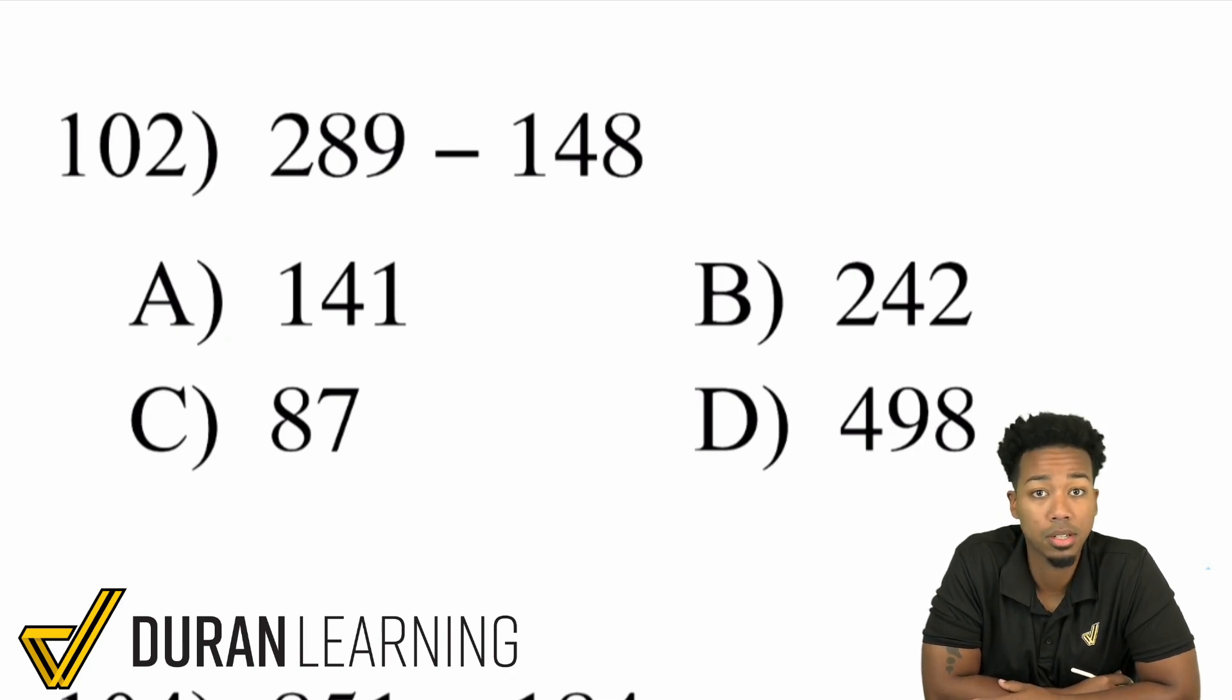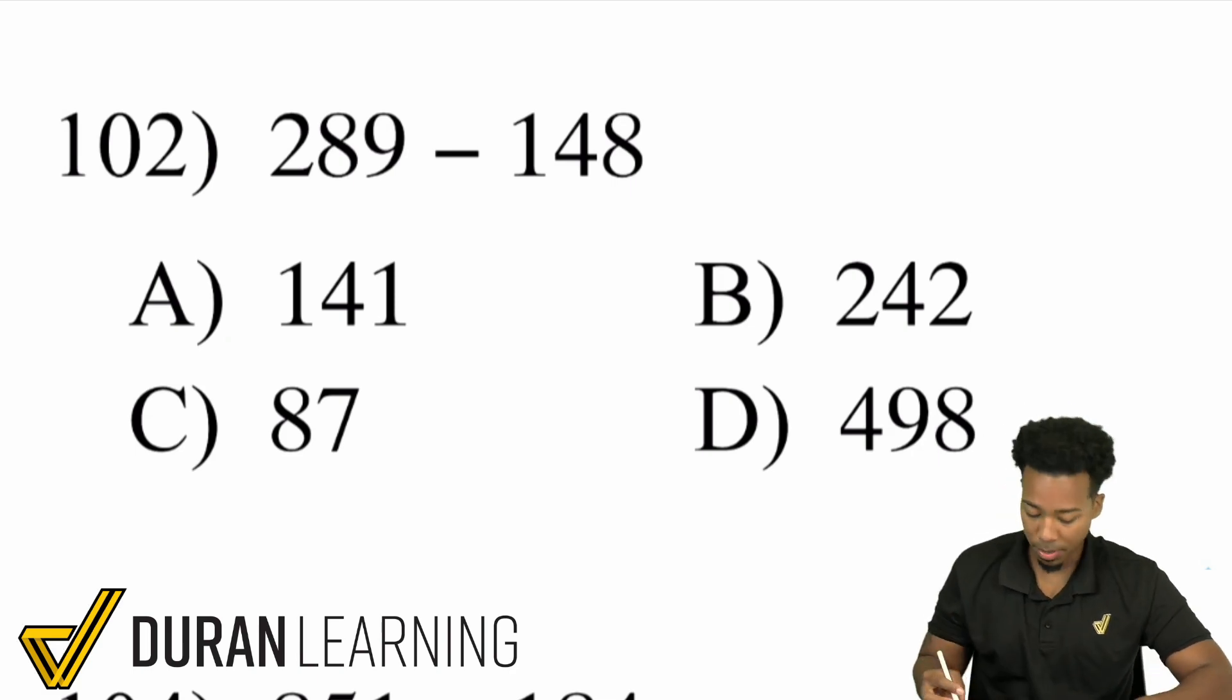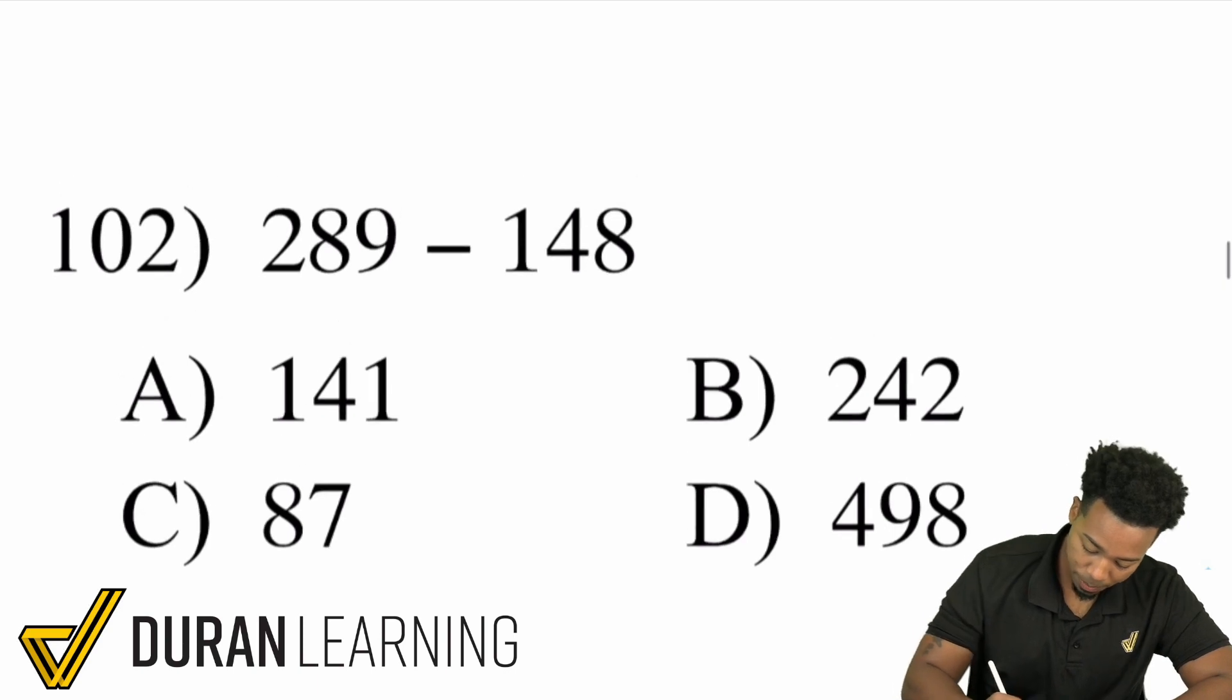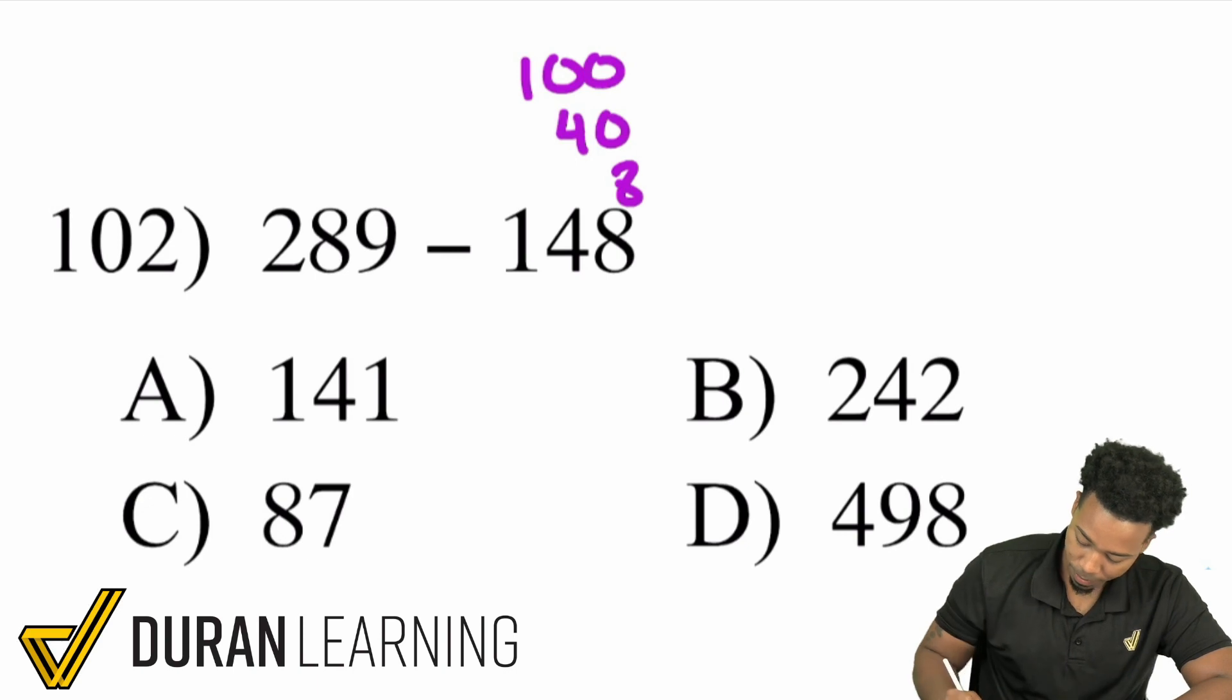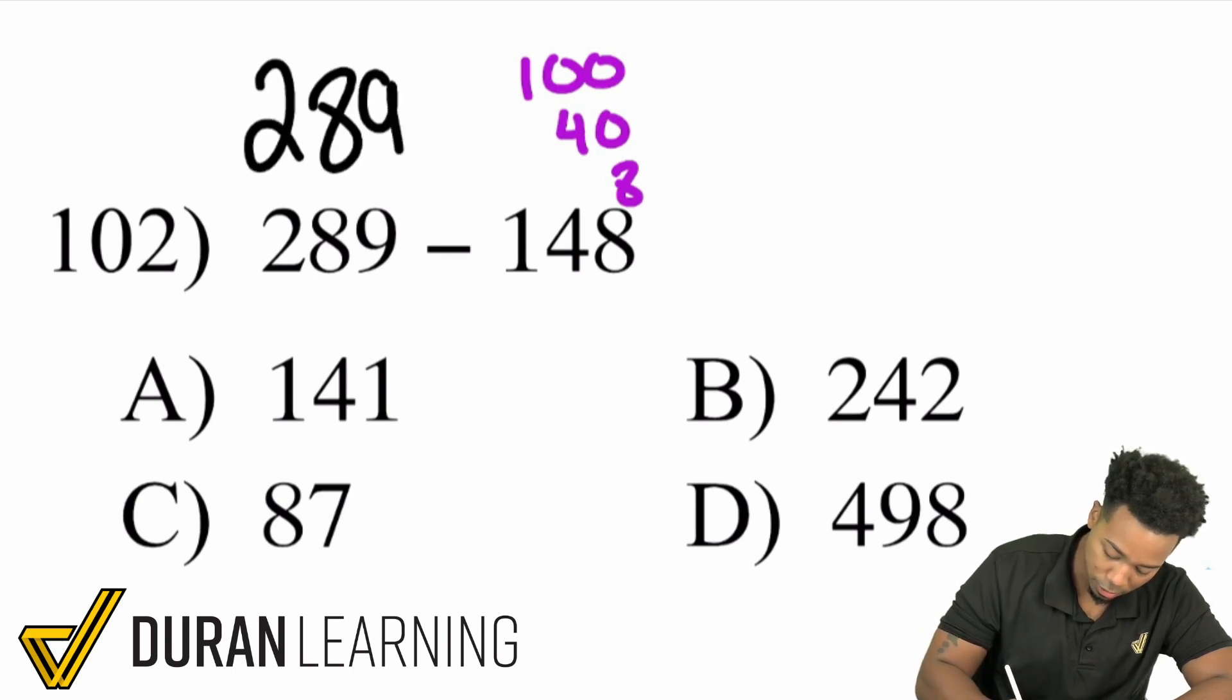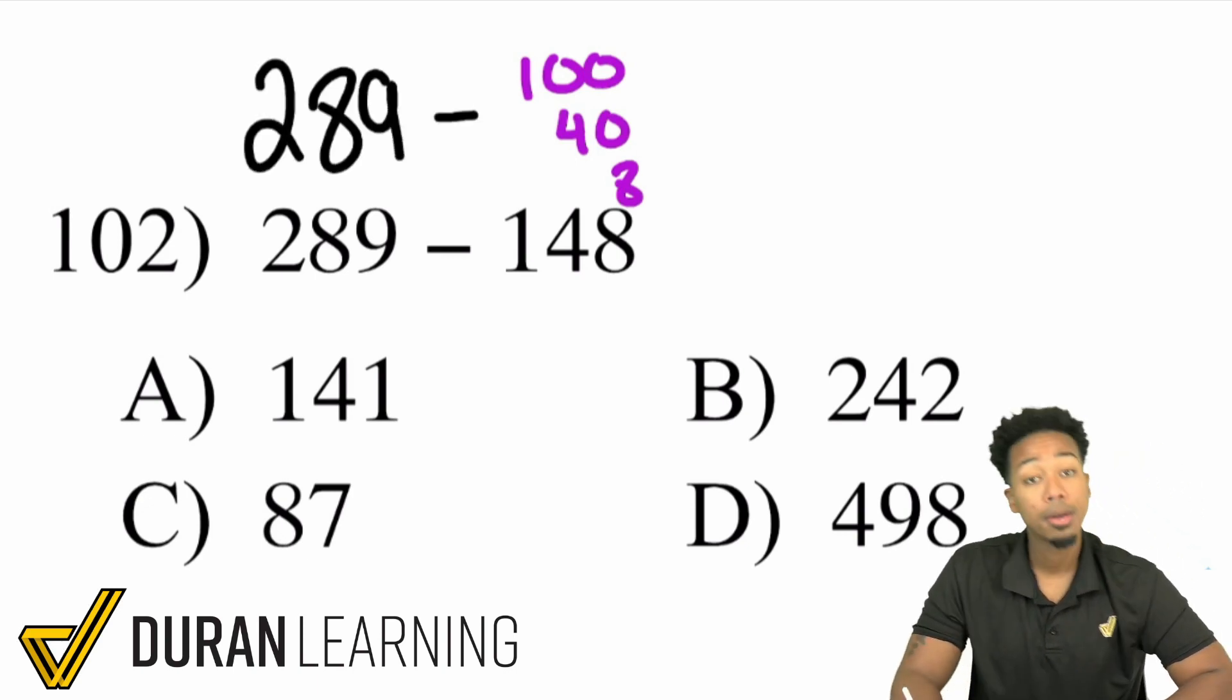Here this is a straight up split and glue. You can go ahead and split it up here. 148 is the same thing as 140 and 8. So really what you're doing in your head is you're saying hey 289 minus 100 minus 40 minus 8.